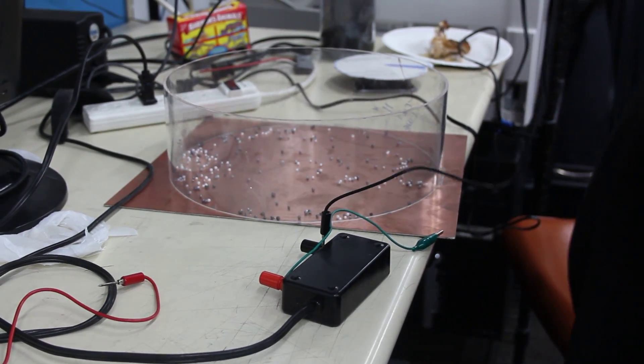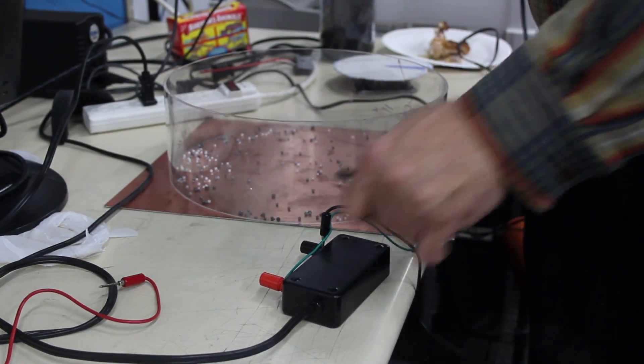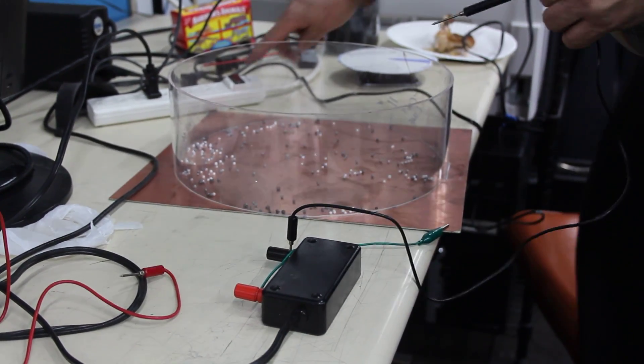Bill Beatty, what do we have here? This is a classic Kelvin Thunderstorm and we have a little 8,000 volt power supply connected to the ground plate.